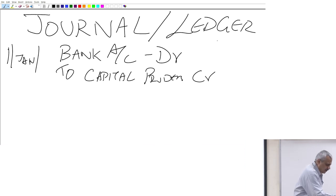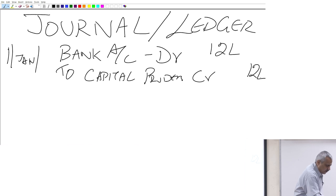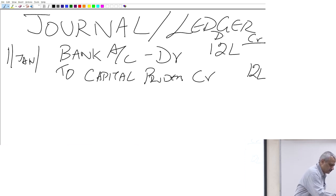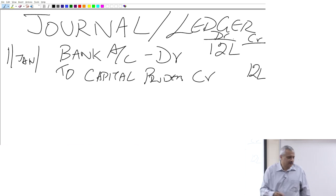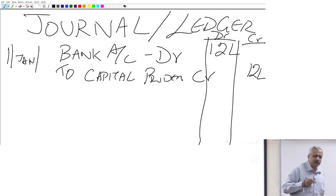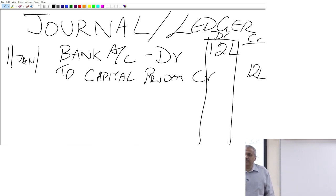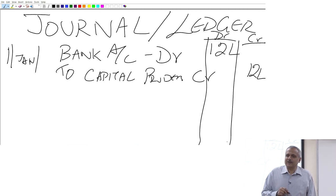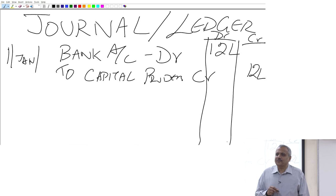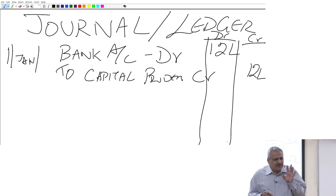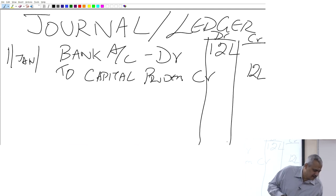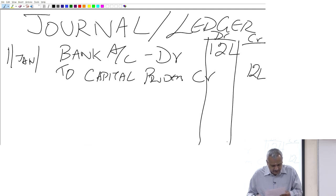There will normally be two columns — a debit balance and a credit balance. Below that you normally write what is called a narration — the purpose, why, etcetera. This is how typically every transaction movement is recorded. Let us pick up another cash transaction — transaction number 5. I am jumping to transaction number 5.